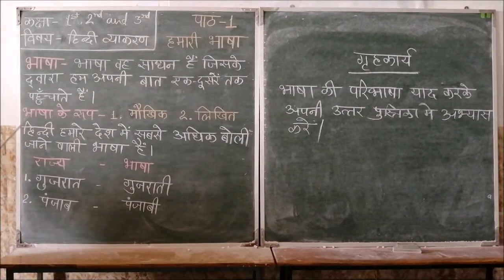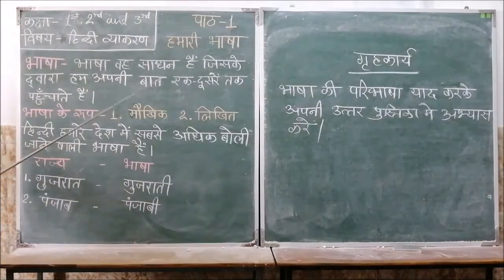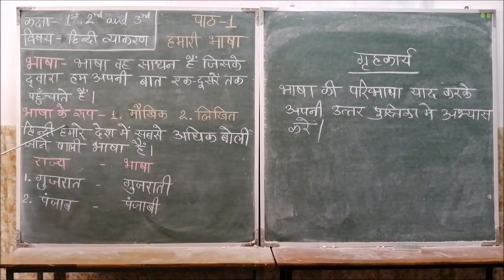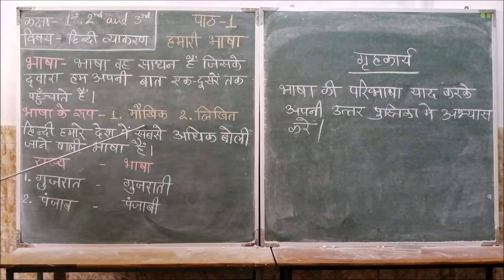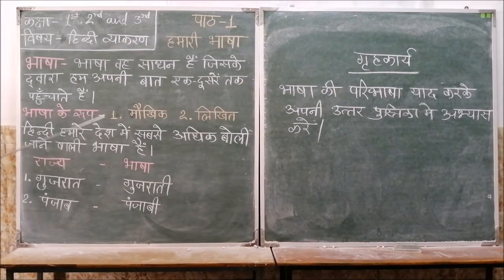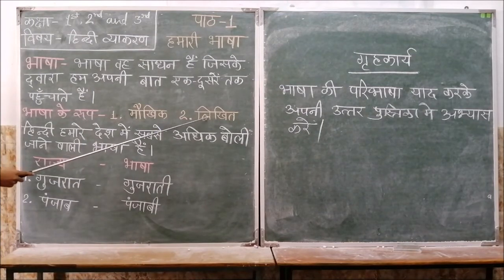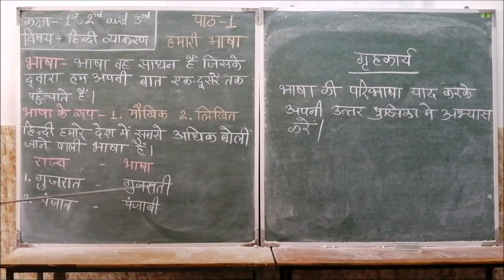Language is the means by which we communicate with each other. The language has two forms: Maukhik (spoken) and Likhit (written). Maukhik refers to the language we speak or listen to, while Likhit refers to the language that we read or write.